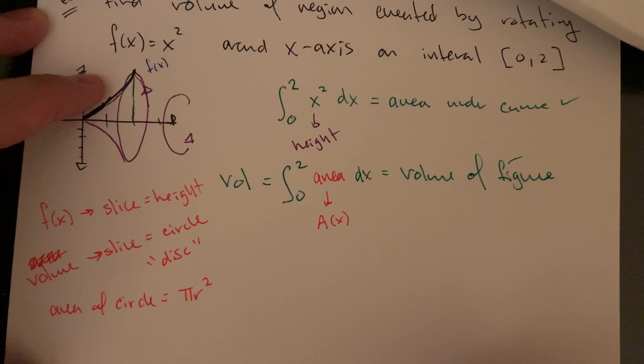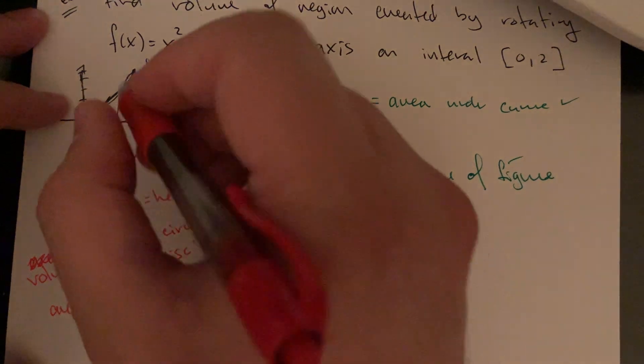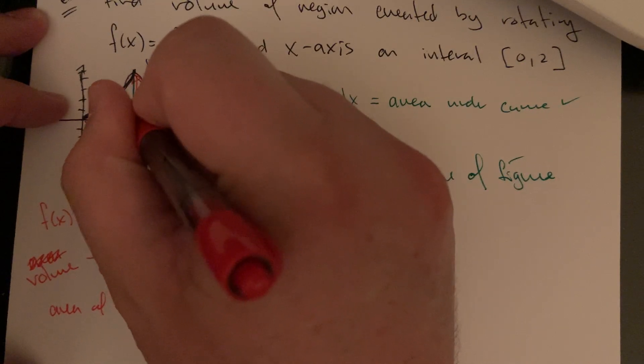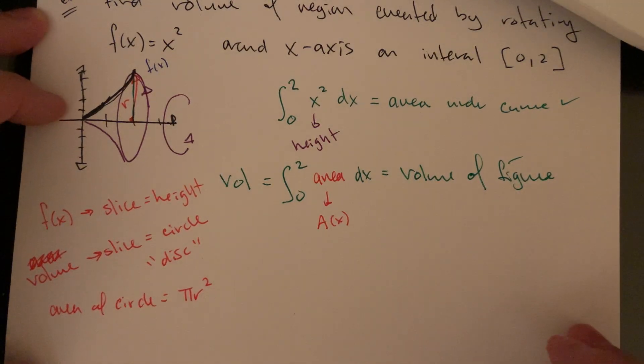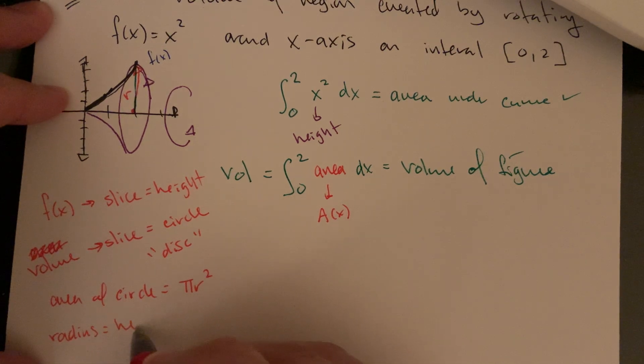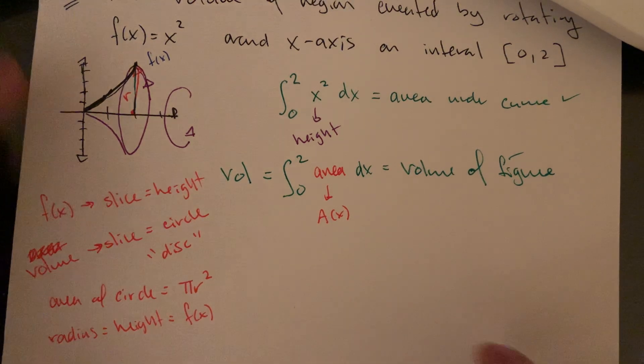So what's the radius that's happening here? The radius of one of these disks is going to be the same thing as whatever the height of the function is. So your radius is going to equal the height, which is whatever our original f(x) values were.